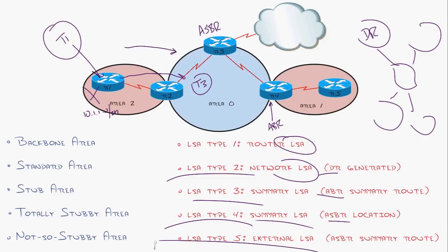Finally, type five LSA is the external LSA. This is the routes that are coming in from outside the system. So type four is where's the ASBR? Type five is here are the routes from the ASBR.